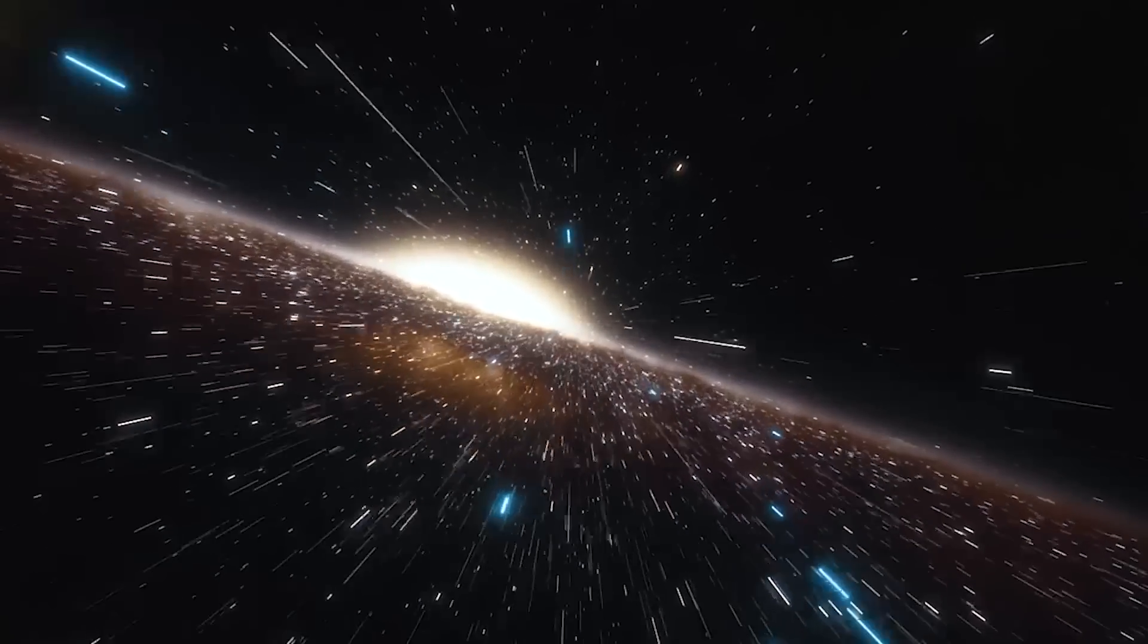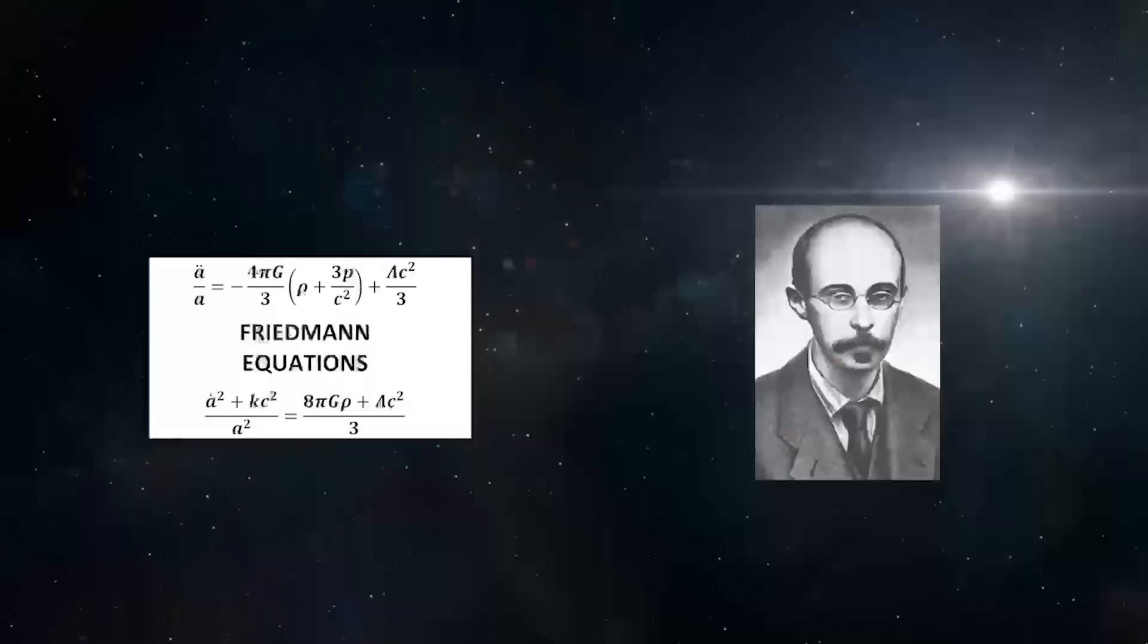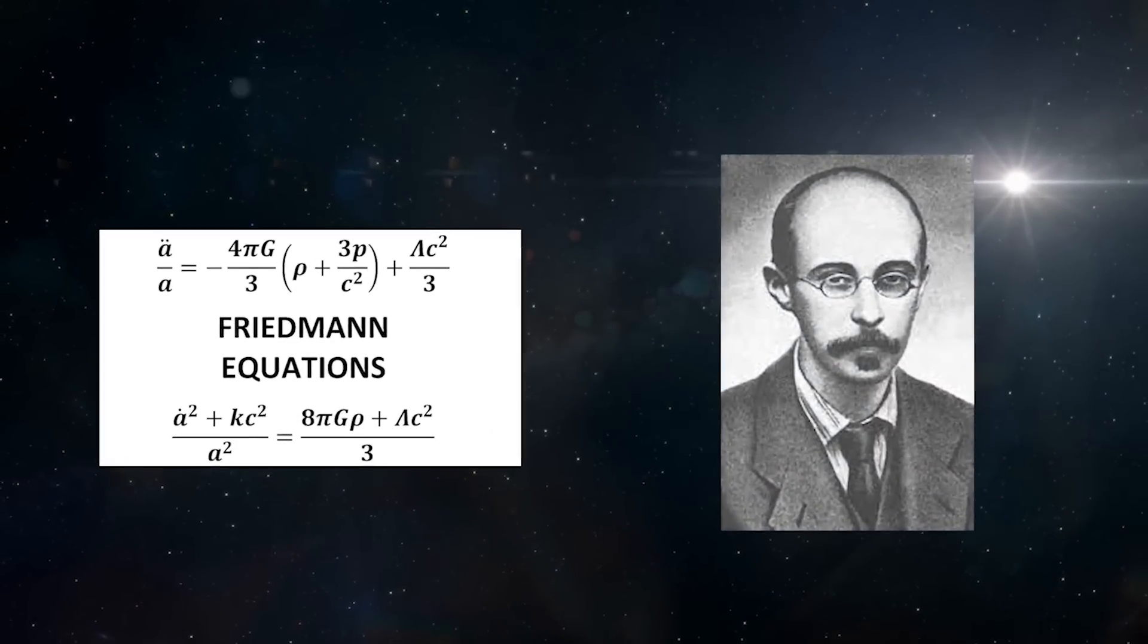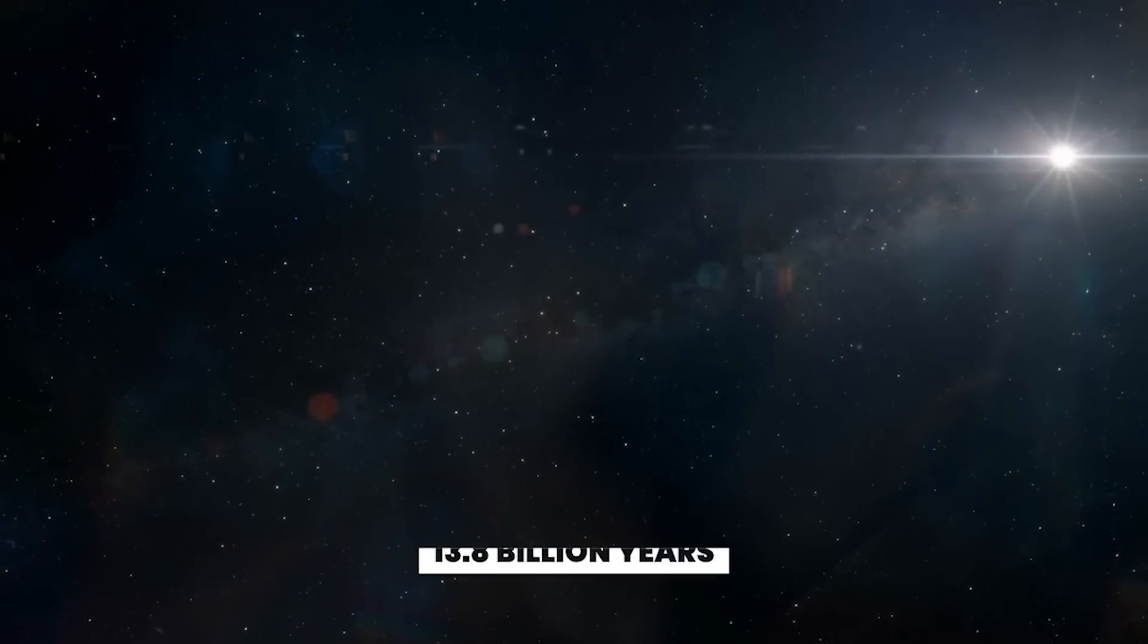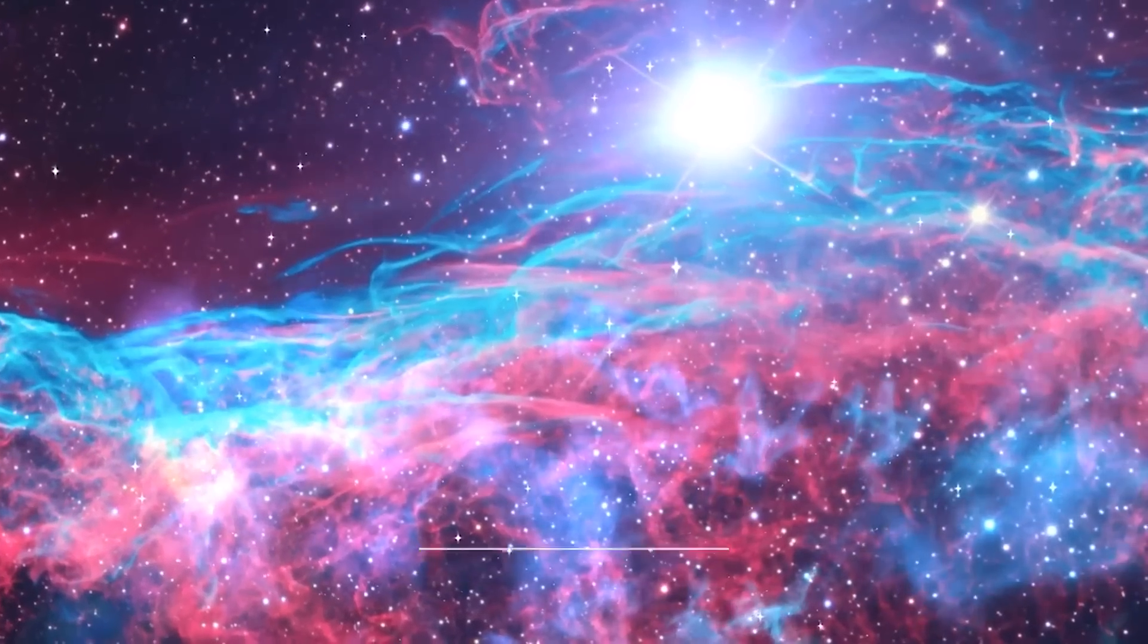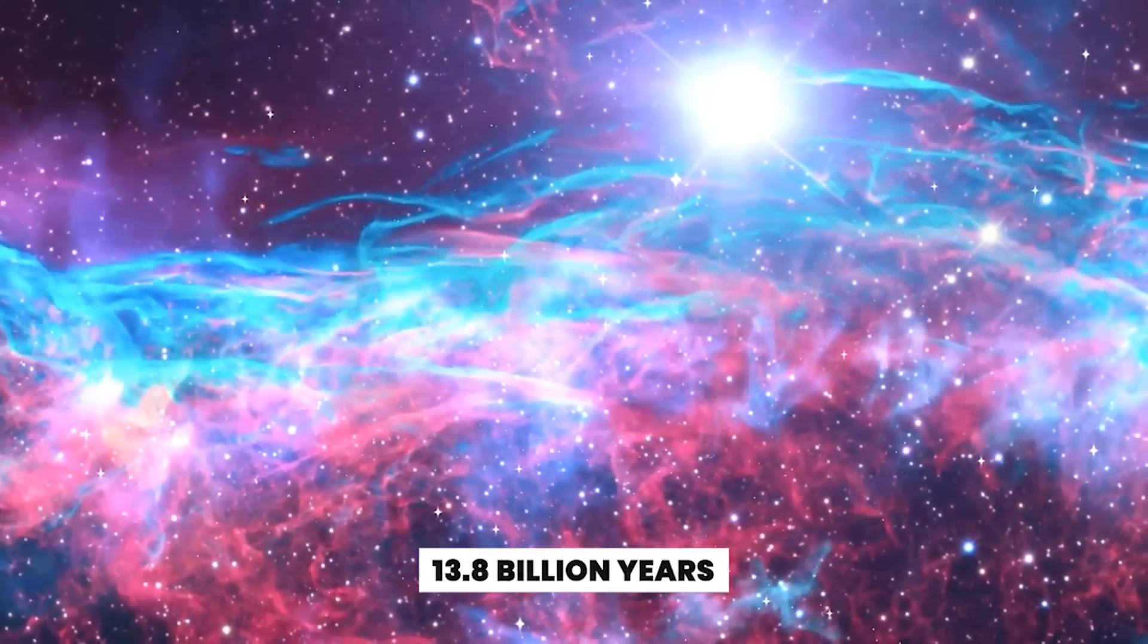These are not ordinary calculations, but if we work them out using Friedman equations while considering all the universe's expansion history, we find that the point from where light has traveled towards us in 13.8 billion years is now actually 46 billion years away from us.